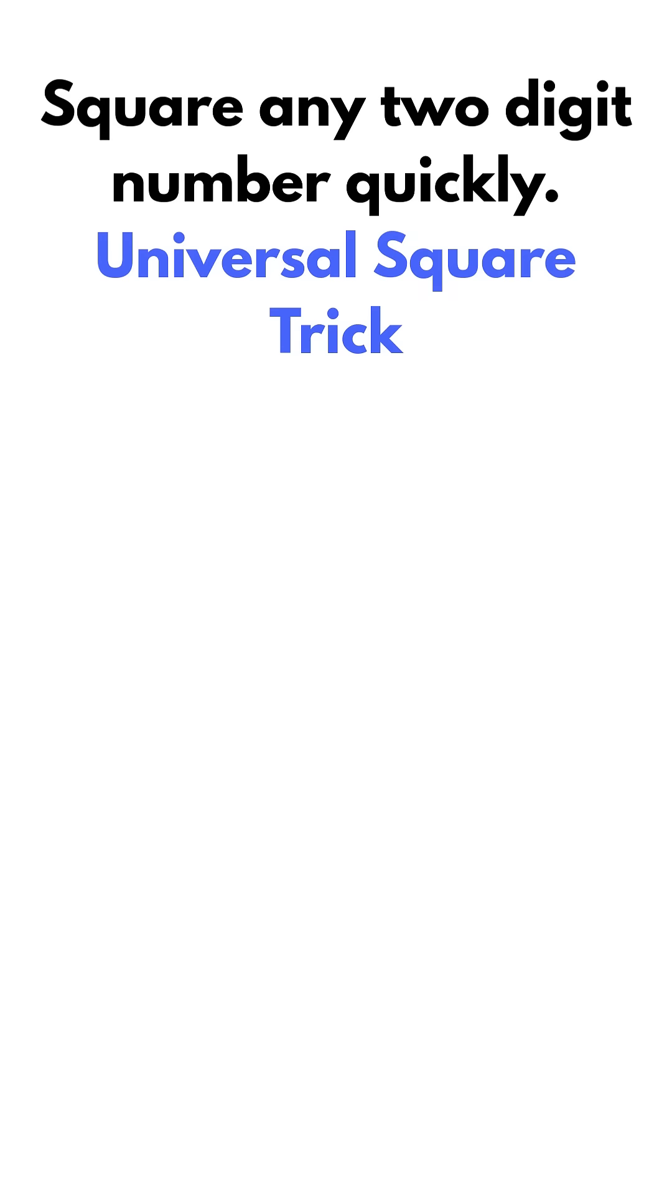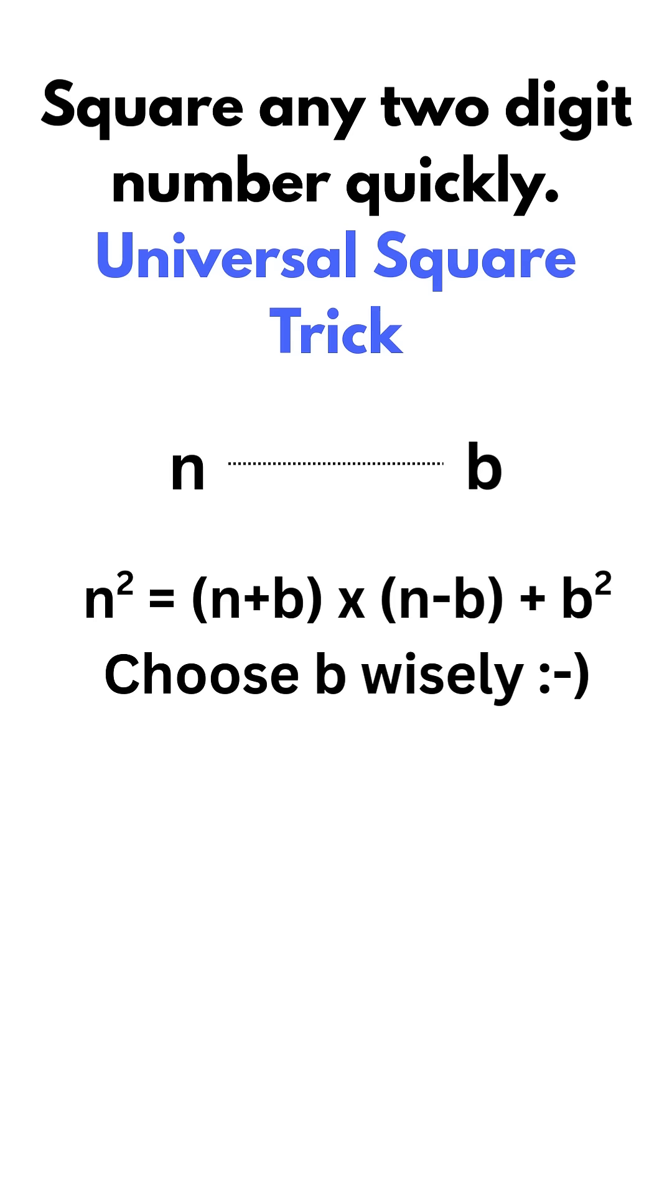It goes like this: if you want to square a number n, you can choose a number b so that it becomes easier for you to calculate the square of n. How? Using a formula: n plus b times n minus b plus b squared.